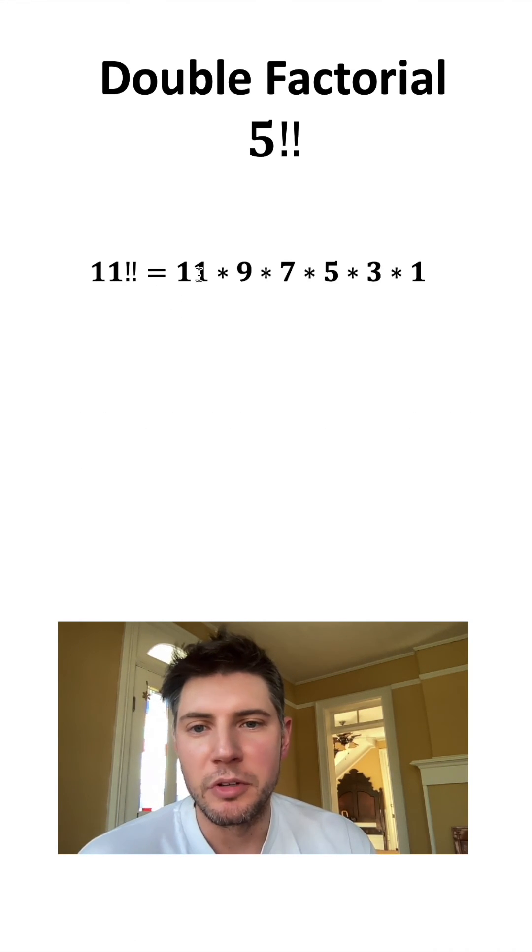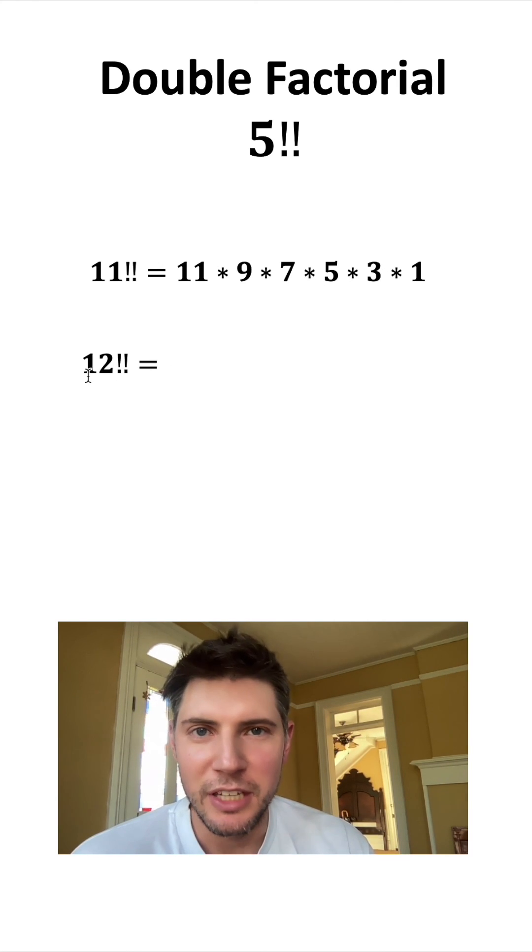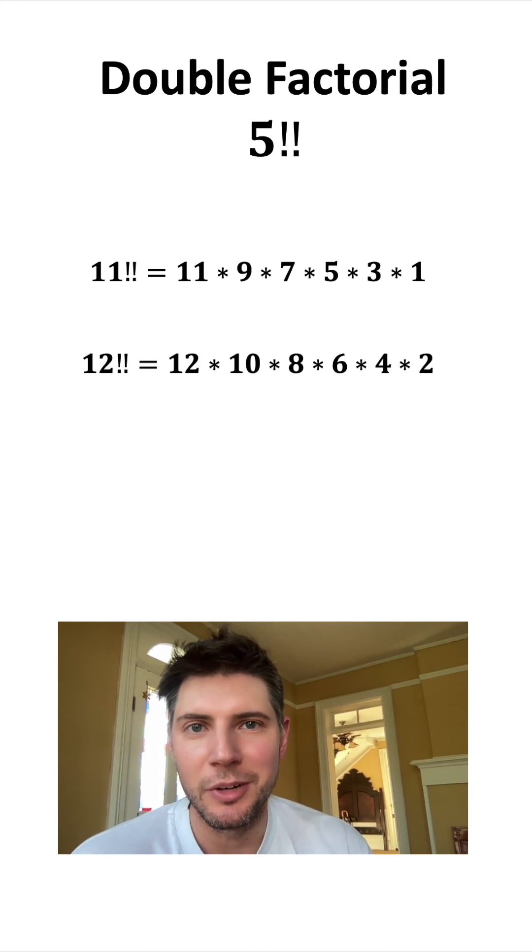But a double factorial of an odd number will always mean that number times all the odd numbers below it. And double factorial and even will always mean that number times all the even numbers below it.